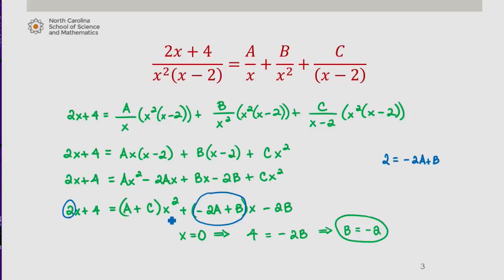And then we see that there's an x squared term on the right and no x squared term on the left, which means then that 0 is equal to A plus C.